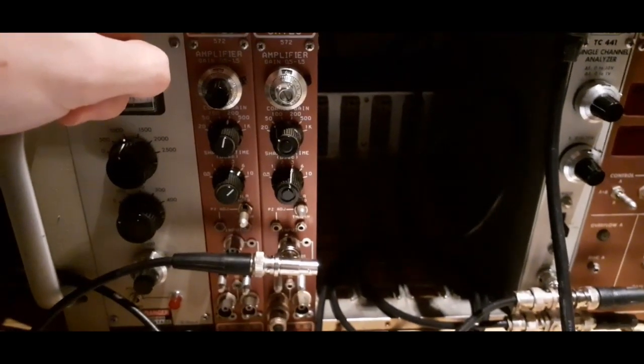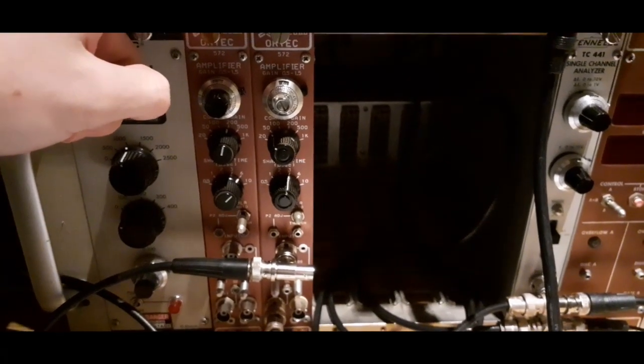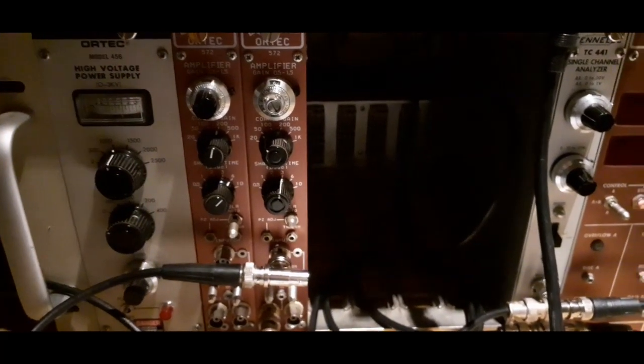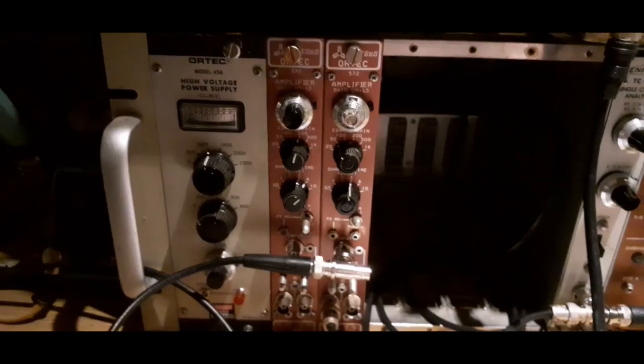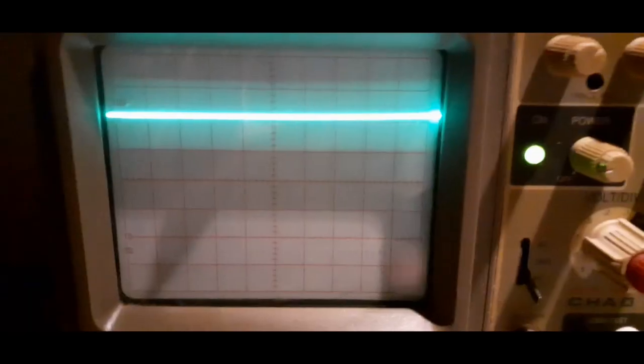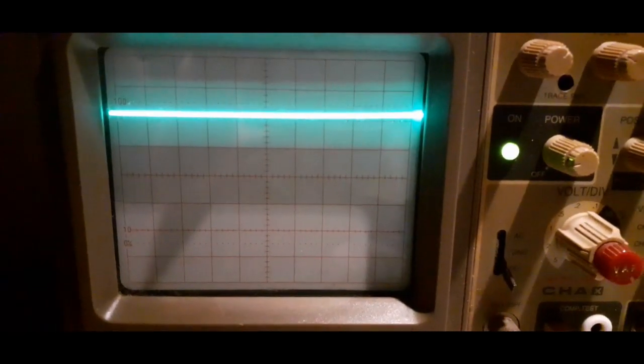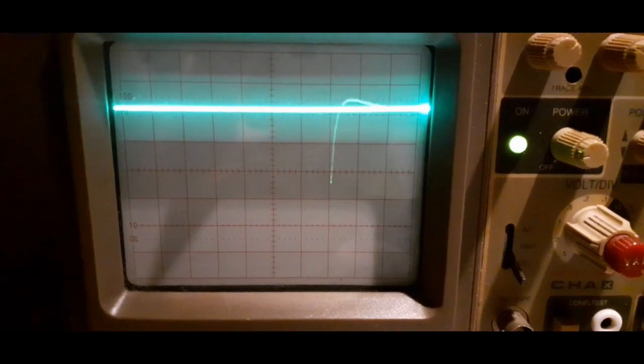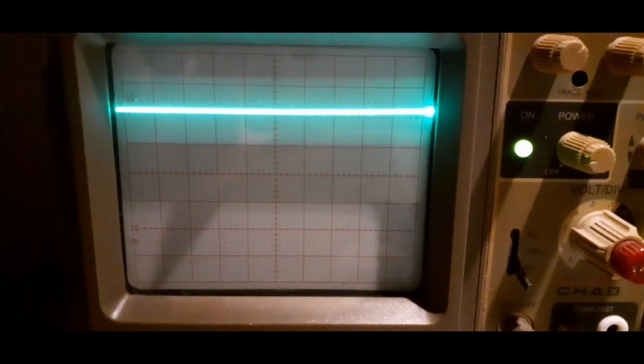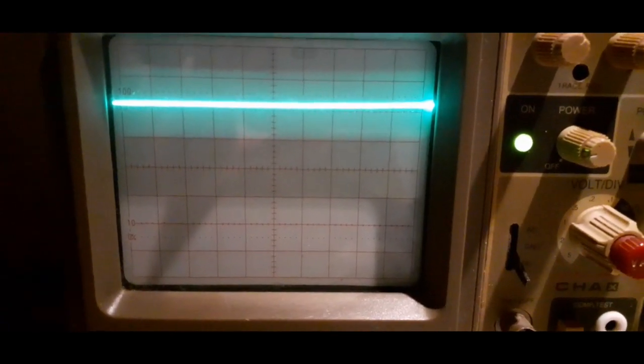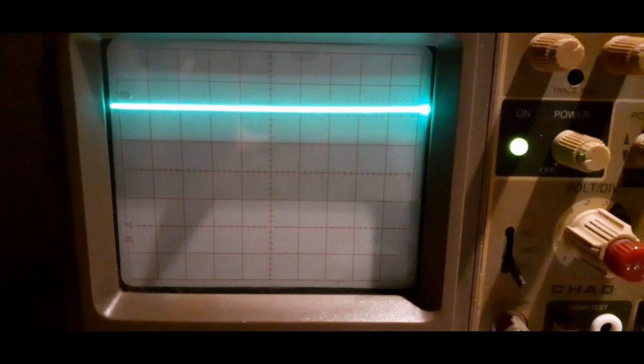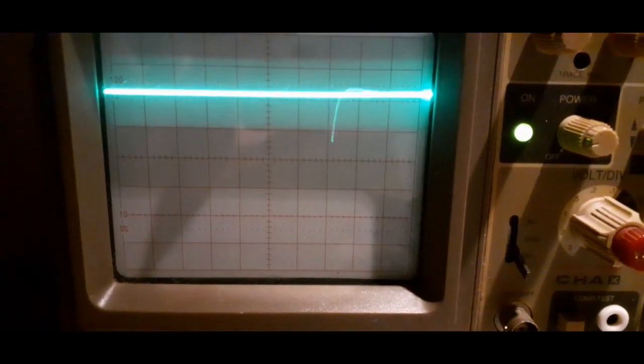Now this is called a spectroscopy amplifier or a shaping amplifier. And the basic idea is that the pulses that come out of the preamp, let me show you. This is directly from the preamp. And as you can see, this is a very sharp fall time pulse with a kind of slow and relaxed return to zero.